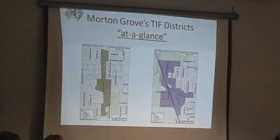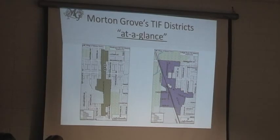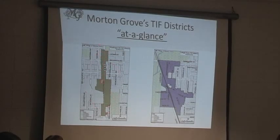There are the boundaries when you look close up. We have two TIF districts in the village. The Waukegan Road District, which Joe talked about — that's on this side, obviously along the Waukegan Road spine.